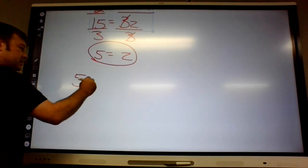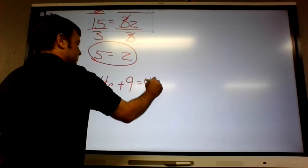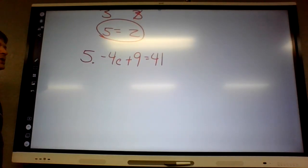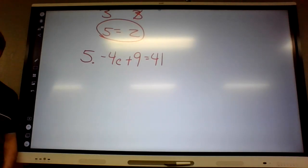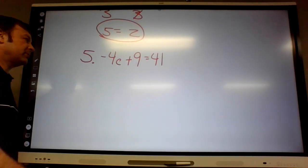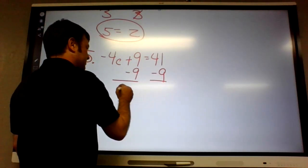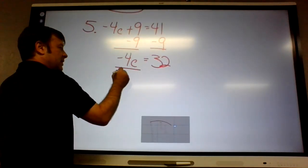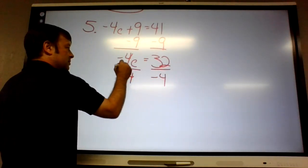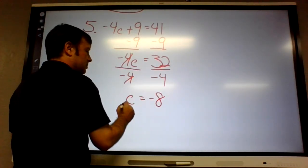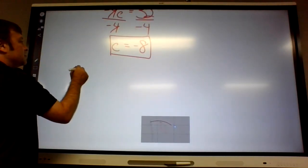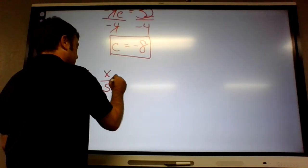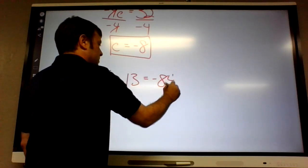Number 5: Negative 4z plus 9 equals 21. Subtract 9. Then what? Divide by negative 4. That would be divide by negative 4.